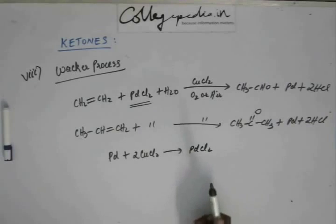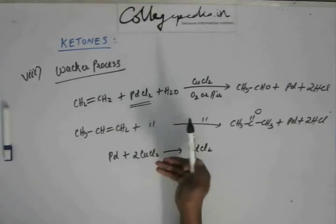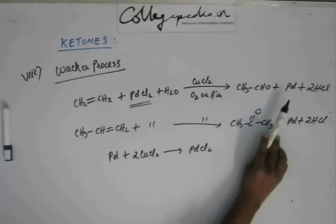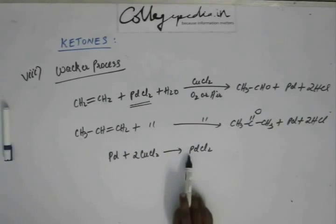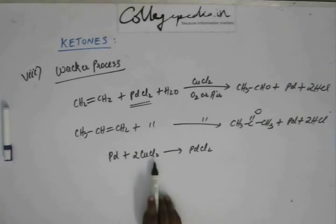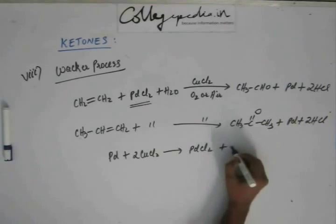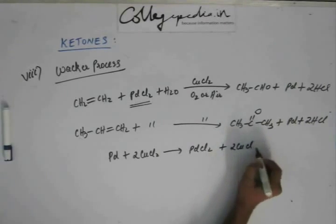So that this palladium chloride which was taken initially that initiated the oxidation of alkene that has been reduced can be again oxidized to produce palladium chloride, and this can pull up more number of reactants to the final product. So basically this cupric chloride is used to regenerate palladium chloride. Apart from palladium chloride we'll have cuprous chloride.